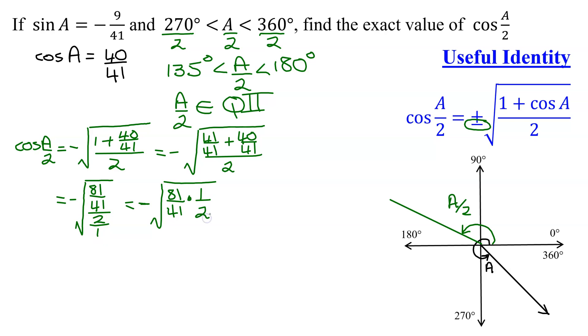Nothing reduces there, so I get the negative square root of 81 times 1 is 81, over 41 times 2 is 82.